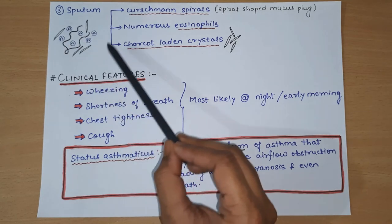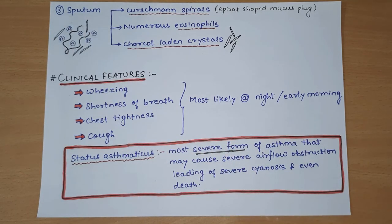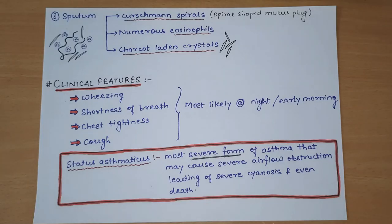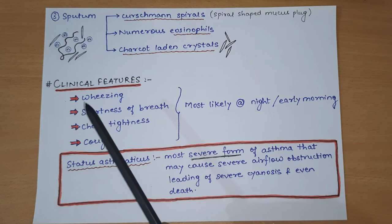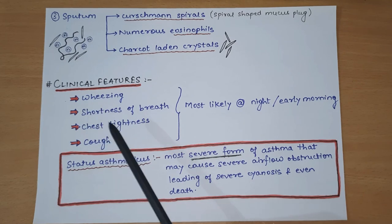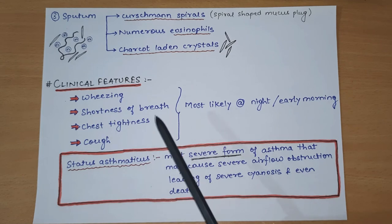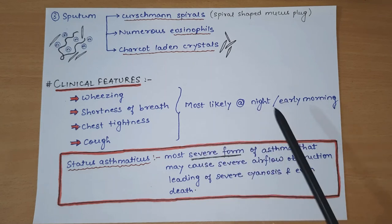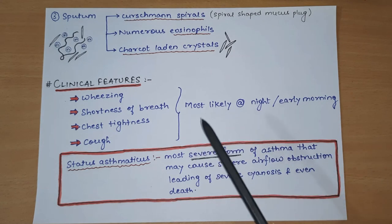So in the morphology of Bronchial Asthma, grossly we can see Curschmann spirals, numerous eosinophils, and Charcot-Leyden crystals in sputum. Coming to the clinical features of Bronchial Asthma - the clinical features are already included in the definition: mainly wheezing, shortness of breath, chest tightness, and cough. These clinical features are worse at night and early morning.